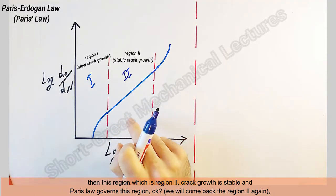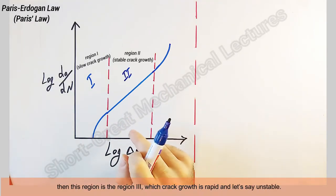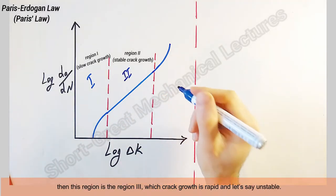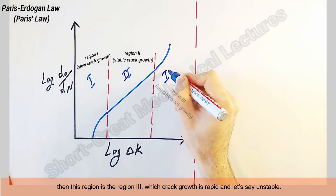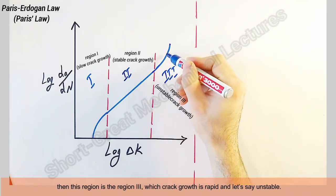Then this region is region three, which crack growth is rapid and unstable.